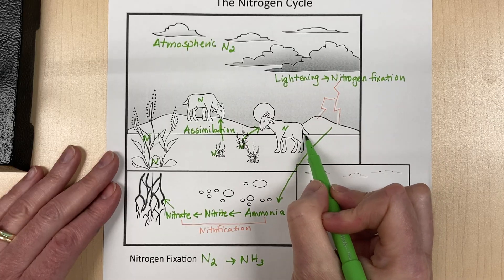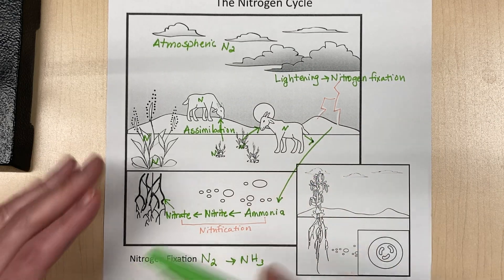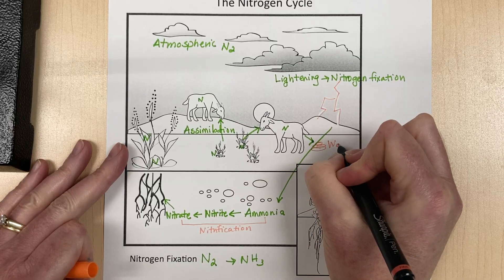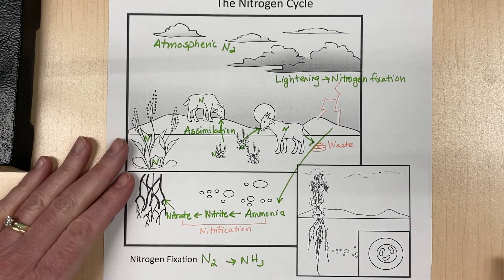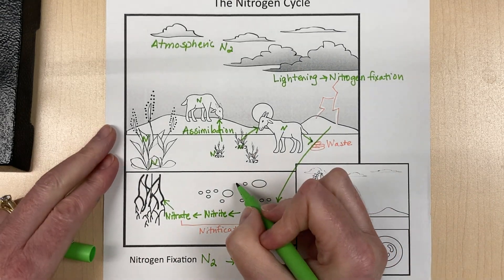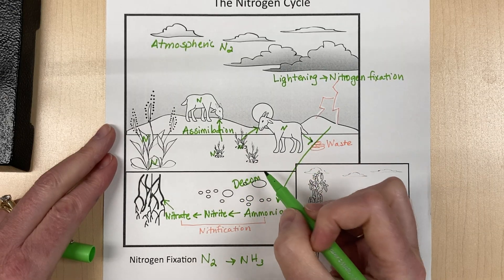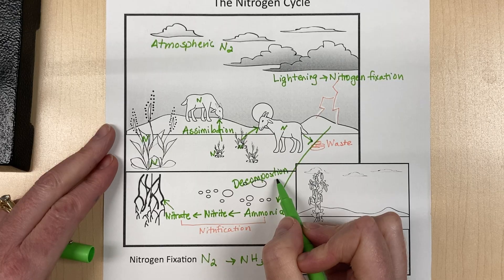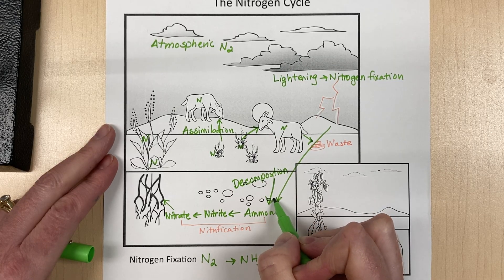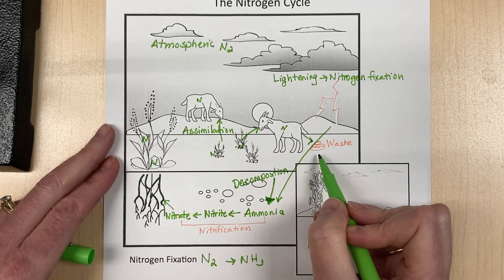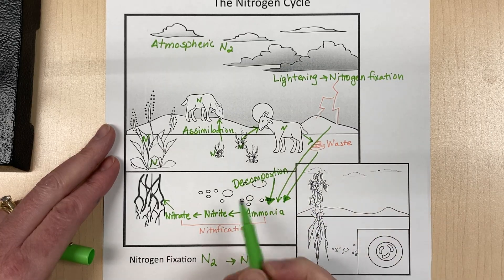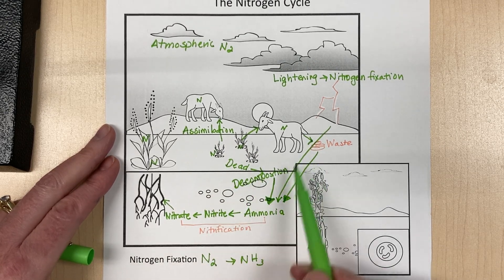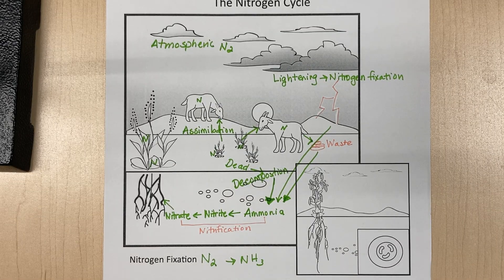Now we have nitrogen in the animals, which helps build our DNA. And then we get rid of it through waste — poop. Waste can also have ammonia in it. The process of decomposition takes the poop and dead things and turns it into ammonia. So when plants and animals die, they also get decomposed, and the decomposition process releases the nitrogen back into the cycle.